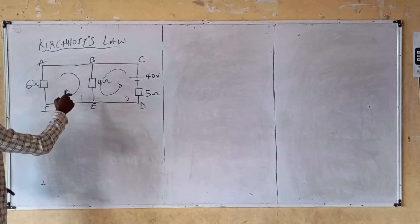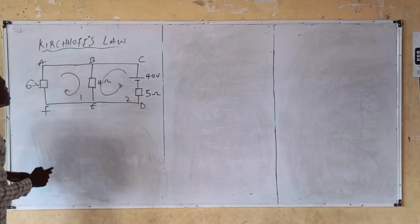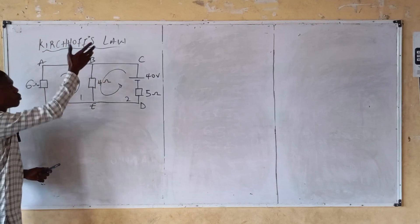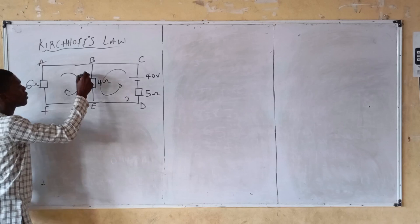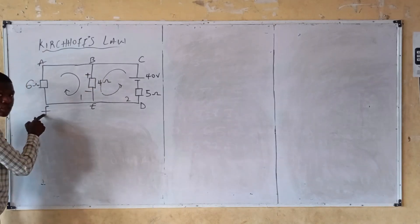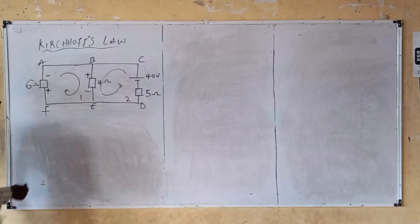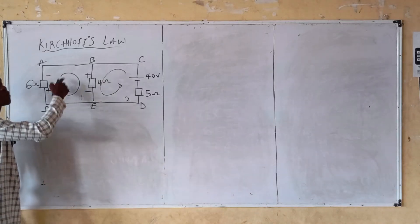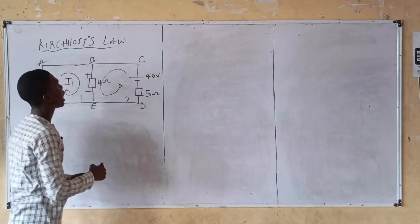For loop one, going in a clockwise direction, I'm starting from A then back to A. Let's assign polarity to the resistors. A to B: no resistor. B to E: I have a four ohm resistor, polarity becomes positive-negative. F to E: no resistor. F to A: polarity becomes positive-negative. I'm done with loop one — let's denote the current in loop one as I1.